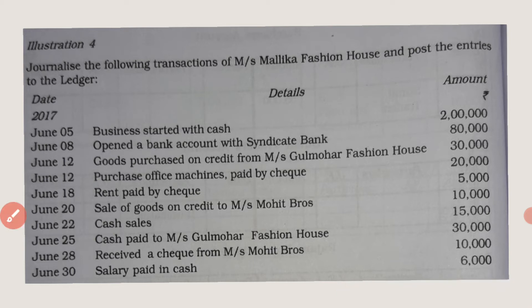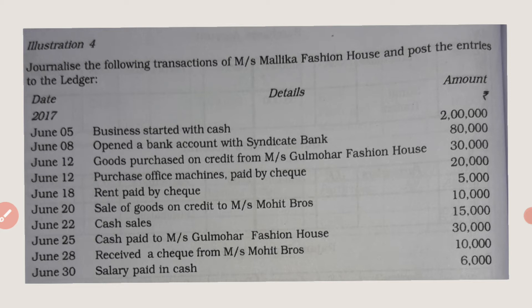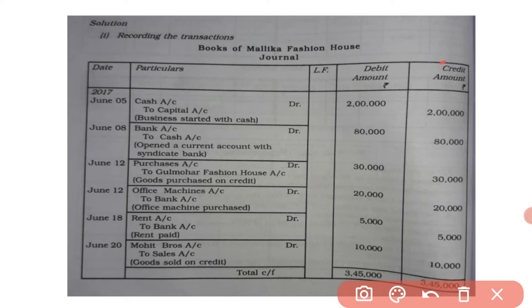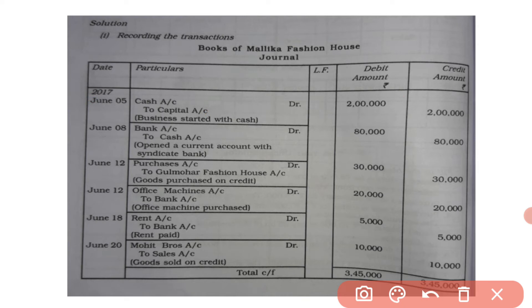Let us now see how the journal entry is prepared. The format is: Books of Malika Fashion House — Journal — with columns for Date, Particulars, LF, Debit Amount, and Credit Amount. On June 5, first transaction: business started with cash 2 lakh rupees. Cash account debited to capital account. Debit 2 lakh, credit 2 lakh. Narration: being business started with cash. While writing the narration you start with the word 'being'.